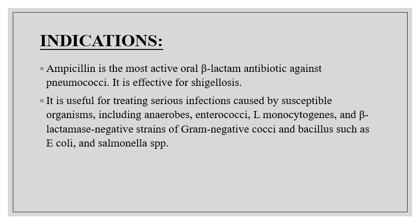Ampicillin is also used in GI infections caused by sensitive strains of E. coli and Proteus mirabilis, and in GI infections caused by Salmonella typhi, Shigella, and other species, usually improved with oral or IV therapy. Culture must be obtained for susceptibility and antimicrobial sensitivity; however, empiric therapy may be started before receiving the results.